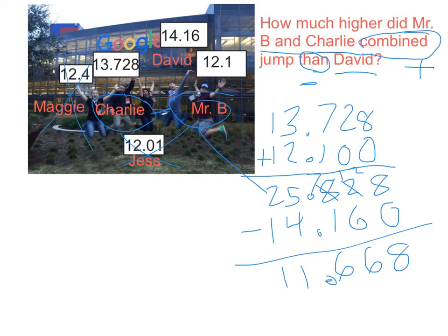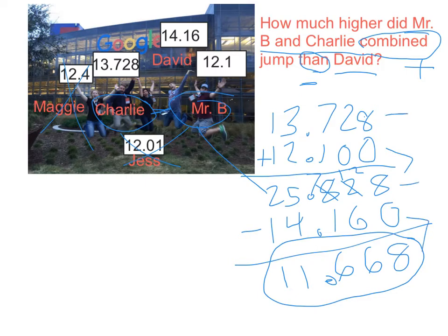25 minus 14 is 11. So we can say that Charlie and I together jumped 11 and 668 thousandths inches higher than David jumped by himself. You could always check this, and I would recommend you check it, especially on the next two problems. You check by adding those back together to get the original number. I'll model that on the next one.